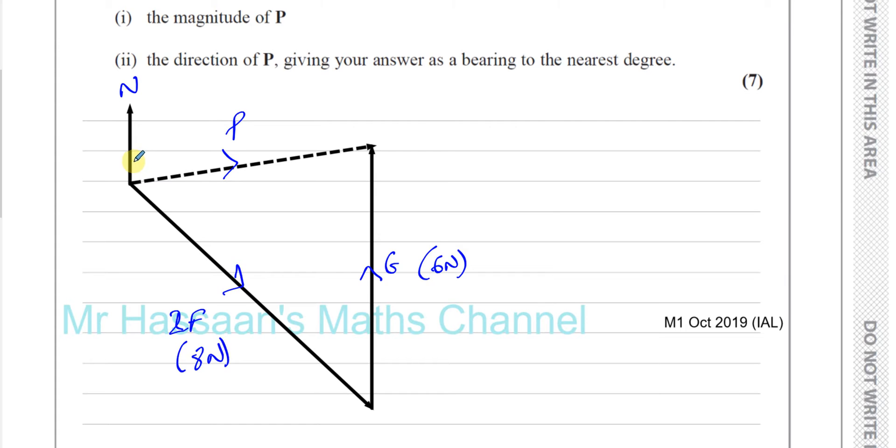Now, what we know is, we know that this angle here is 120 degrees because there's a bearing of 120. Now, we also know that this is a north line. Remember, bearings are always measured from the north line clockwise. Okay, always measured in the clockwise direction. So, 120 is going to be here. And I know that this is north. I know that this is north.